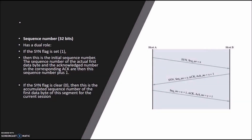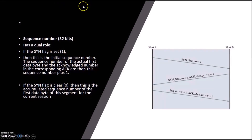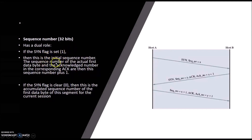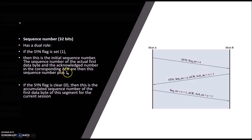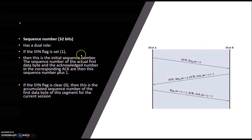For the sequence number, there are two possibilities: either the SYN flag is set to one or the SYN flag is set to zero. When the SYN flag is set to one, this is the initial sequence number — the sequence number of the actual first data byte — and the acknowledgement number in the response is the sequence number plus one. To understand this, consider two hosts: host A and host B.